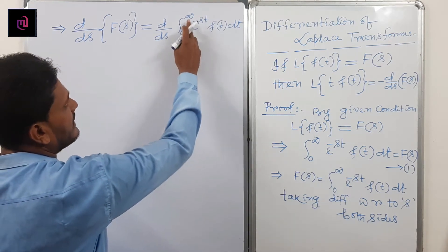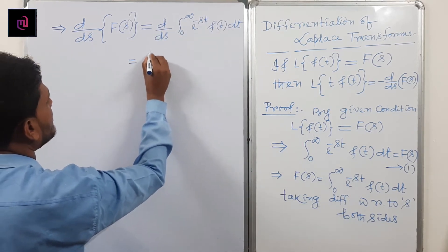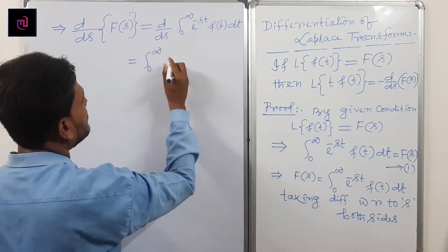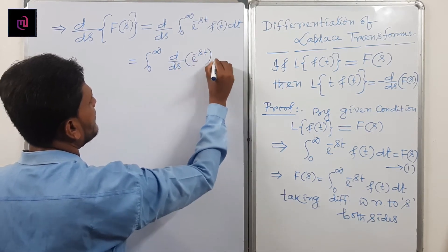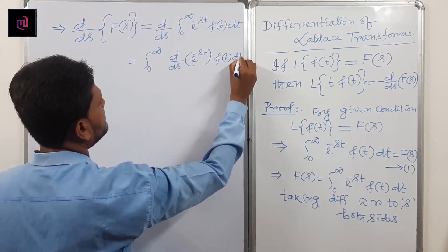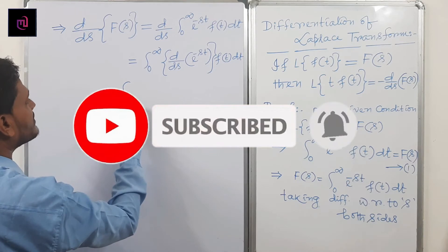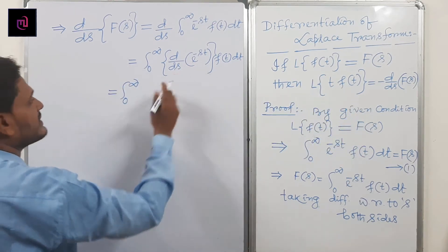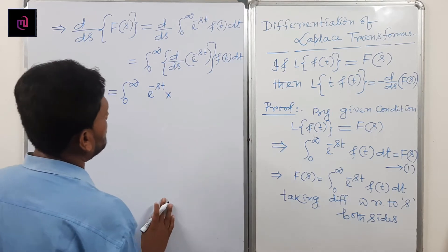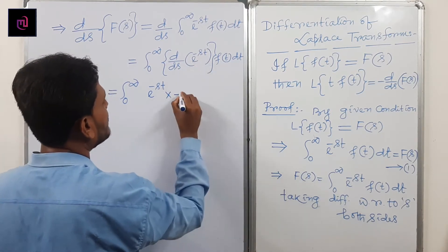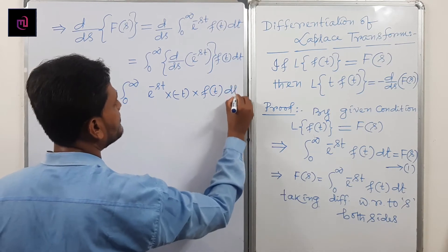So it becomes integration from 0 to infinity of d/ds of e^(−st) into f(t) dt. The differentiation of the exponential function: we write the exponential first, then d/ds of (−st). Since d/ds of s becomes 1, it becomes minus t. So the result is integration from 0 to infinity of (−t)·e^(−st)·f(t) dt.